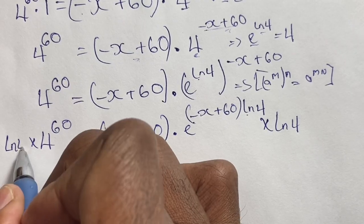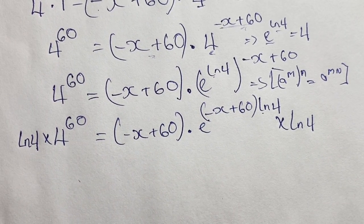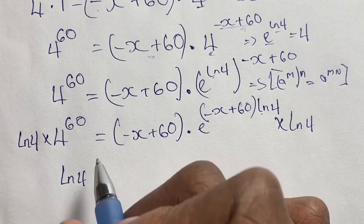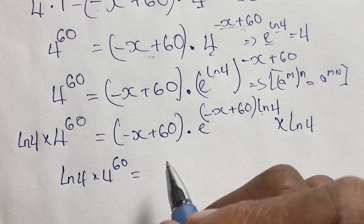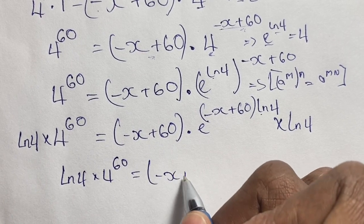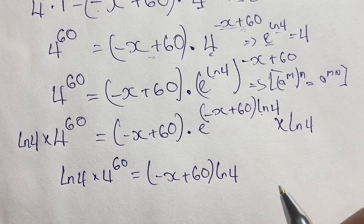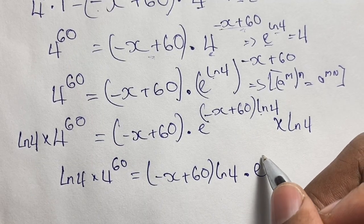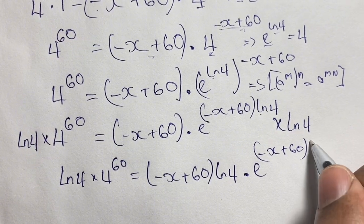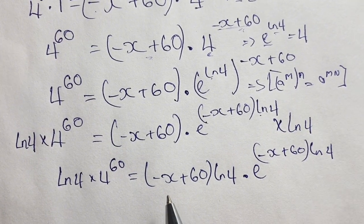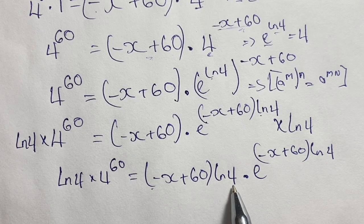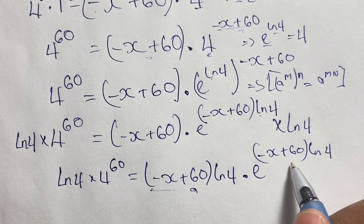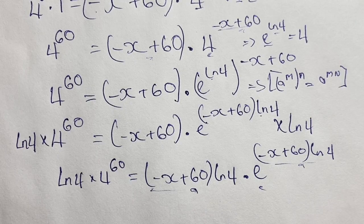Rewriting our equation, we have ln 4 times 4 to the power of 60 equals negative x plus 60 in brackets times ln 4, times e to the power of negative x plus 60 times ln 4. Now in the base we have negative x plus 60 times ln 4, and in the power we also have negative x plus 60 times ln 4. So we have our expression in the form a times e to the power of a.